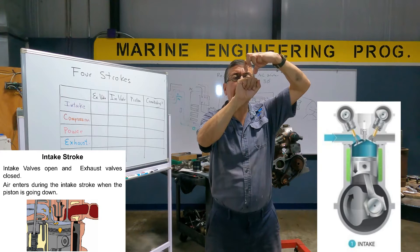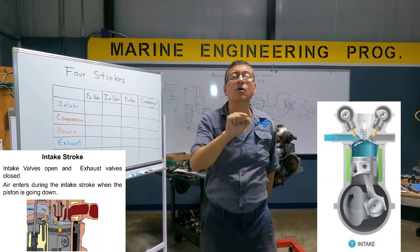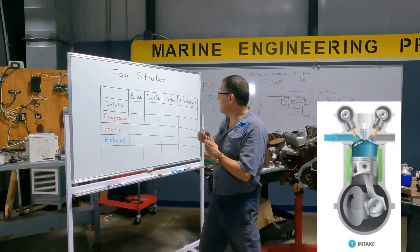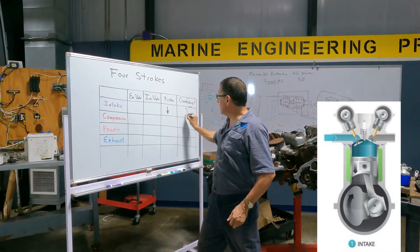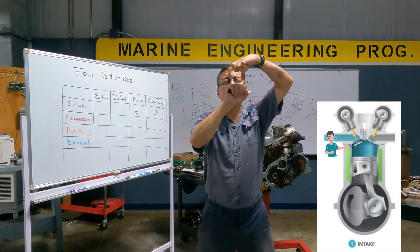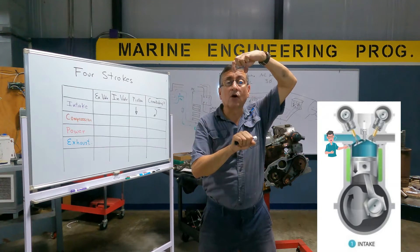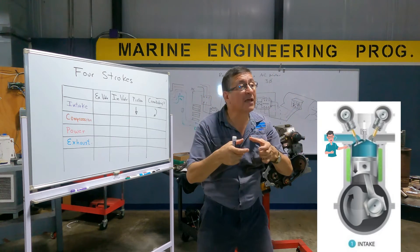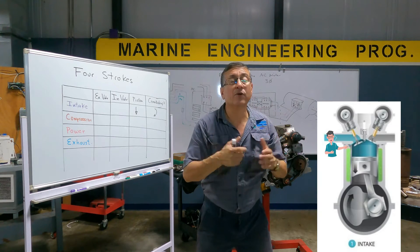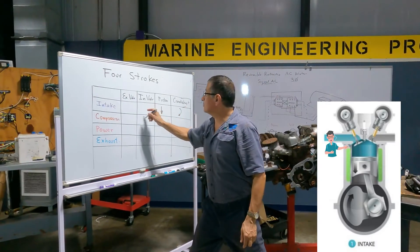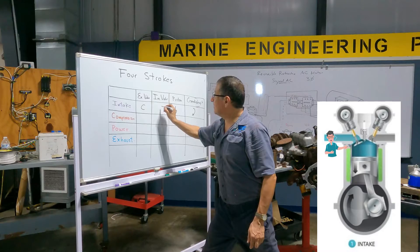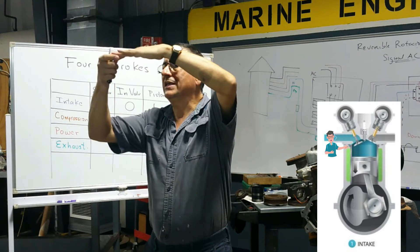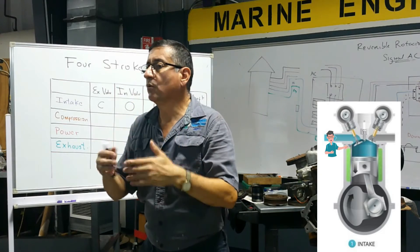In intake, the piston is going down. When the piston is going down, the crankshaft rotates 180 degrees. What valves are open? Only the intake valves. The intake valve opens, the piston goes down, and the cylinder is filled with air in diesel engines, or with air and fuel in gasoline engines. The exhaust valves are closed and only the intake valves are open.